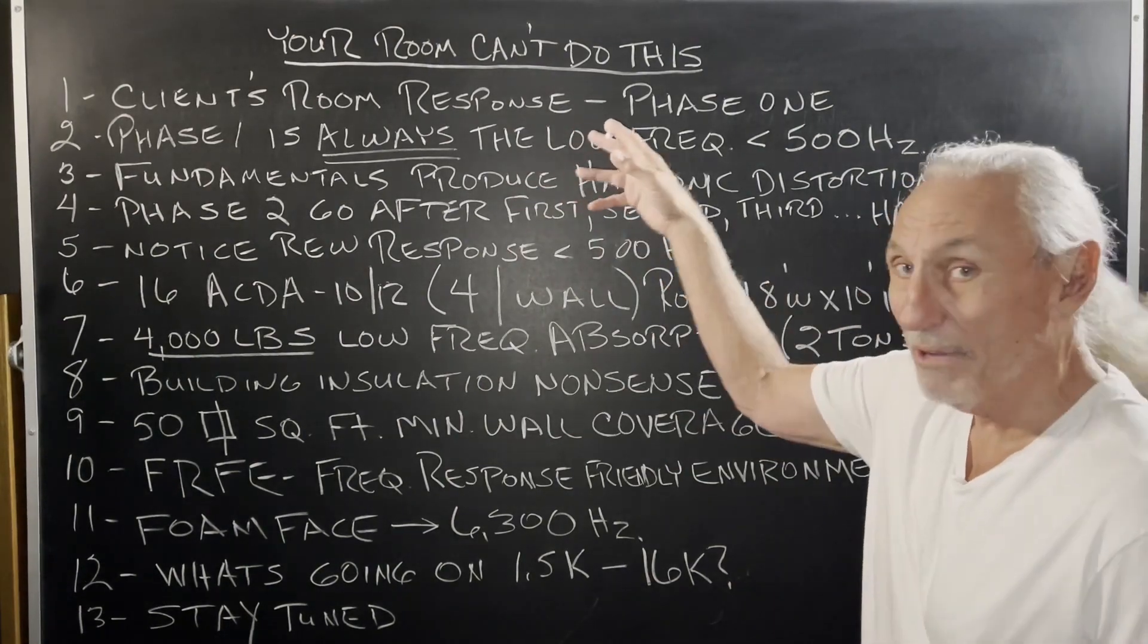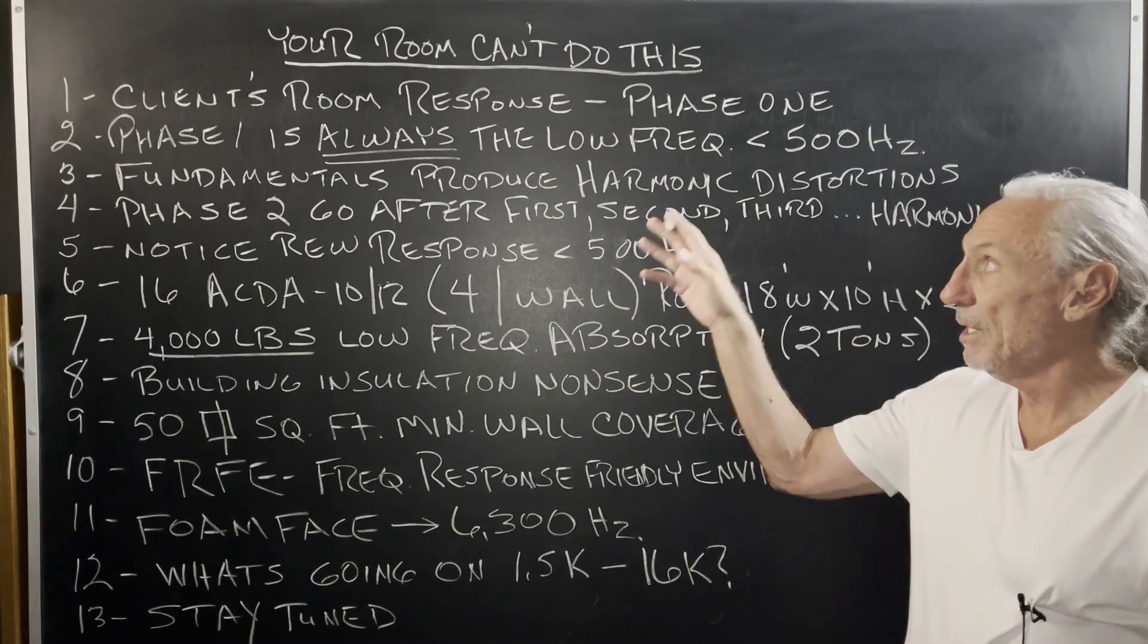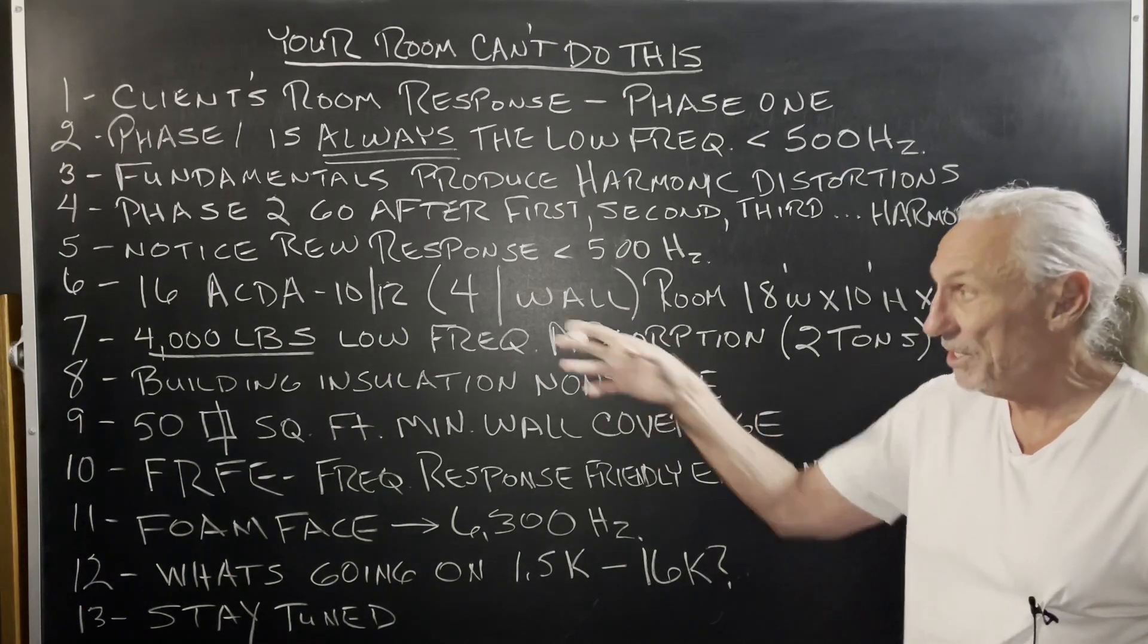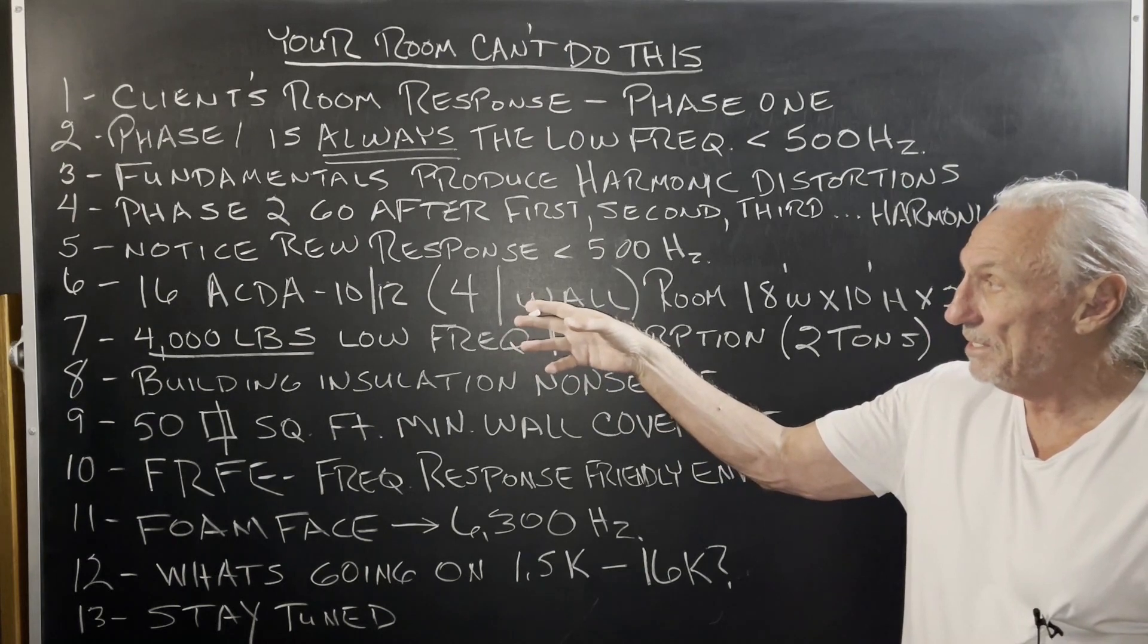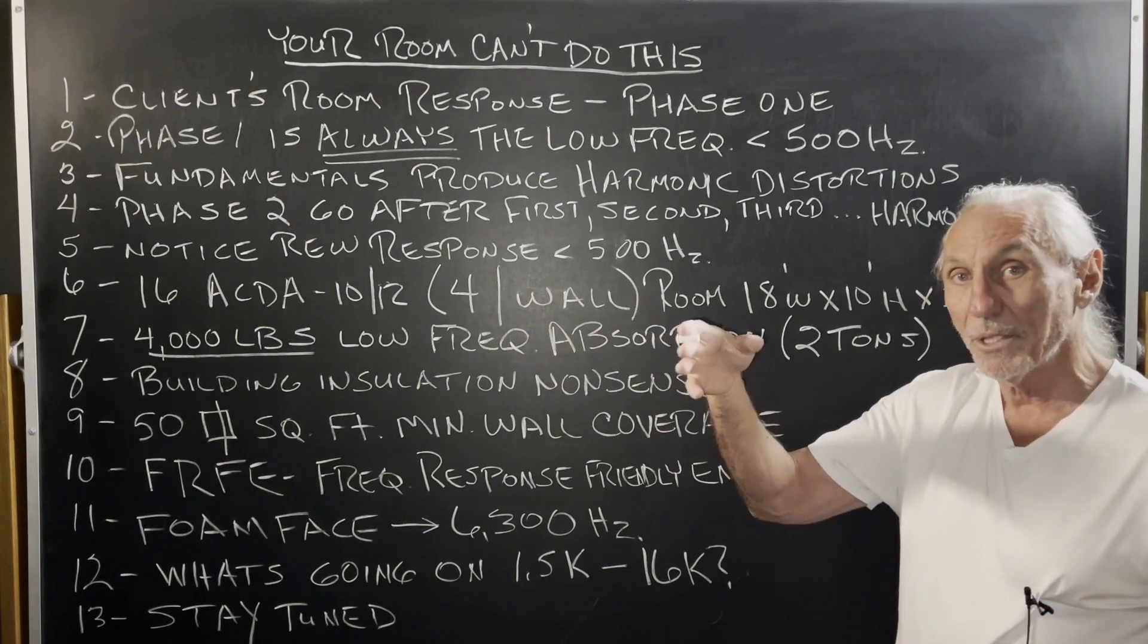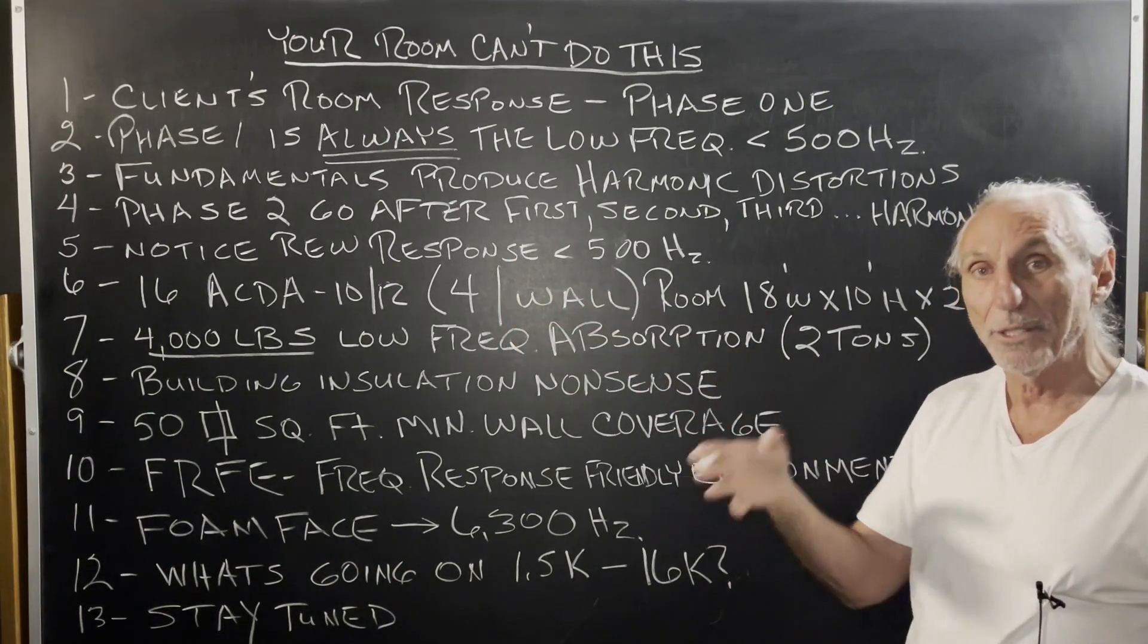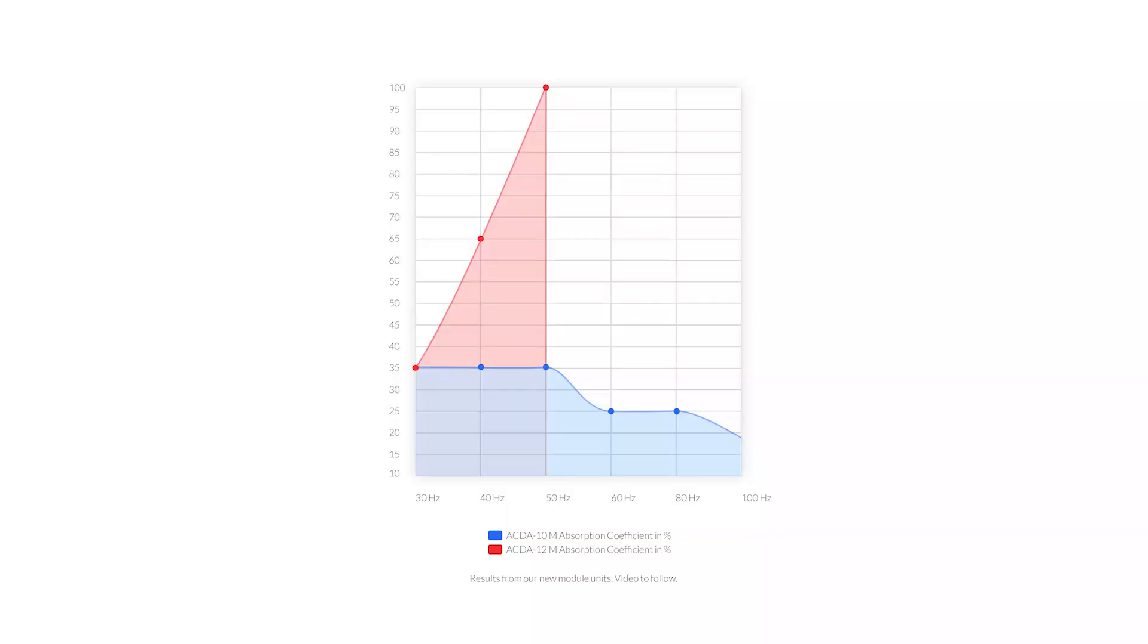So in phase one, we always go after the low frequencies in any room. This is a client. They bought 16 of our ACDA 10s and 12s. I don't remember what combination but we know from many videos, the ACDA 10 is our broadband 30 to 300 really strong and then 30 to 60, 300 with the foam and then the 12 is our big sponge 30 to 50 with great performance. And you can see that on there.